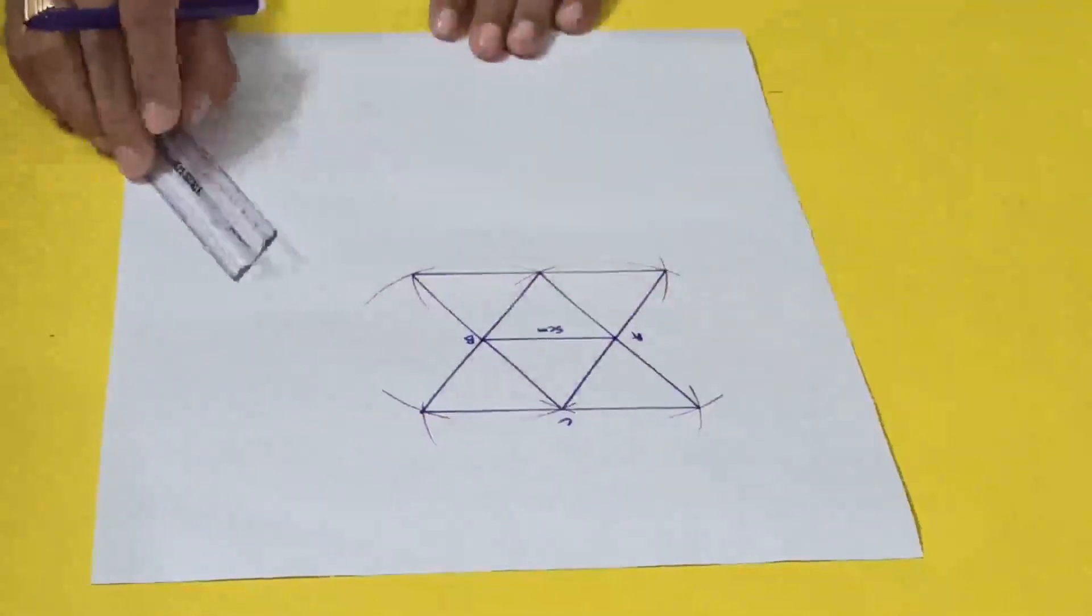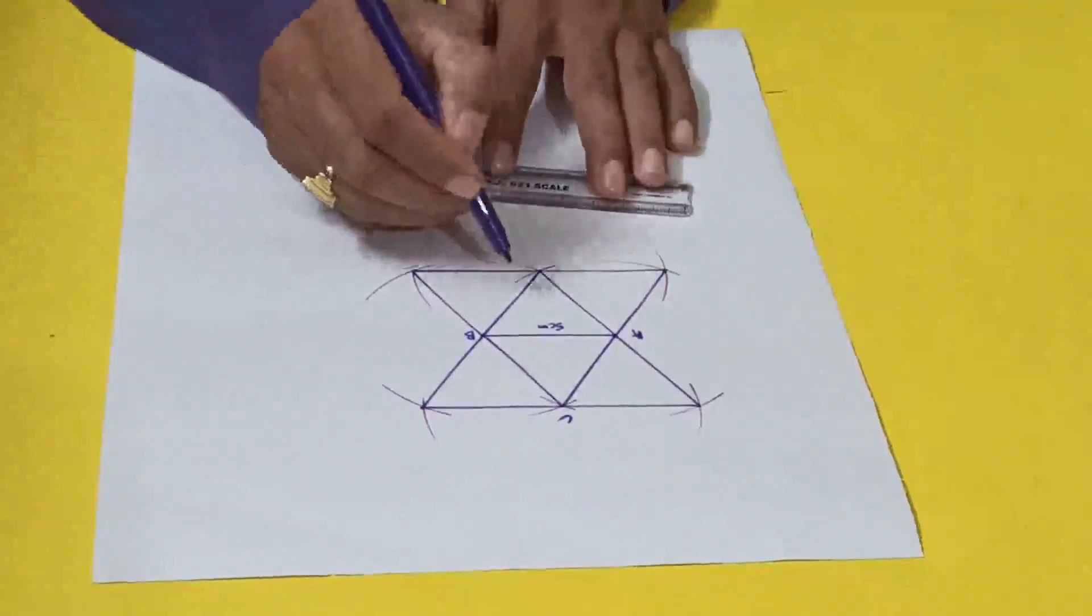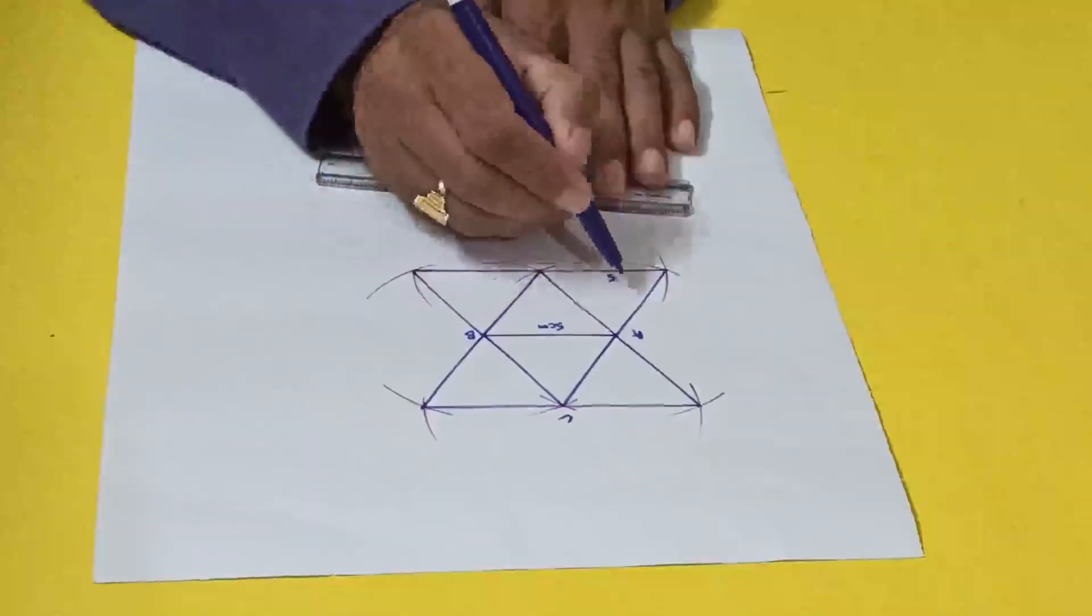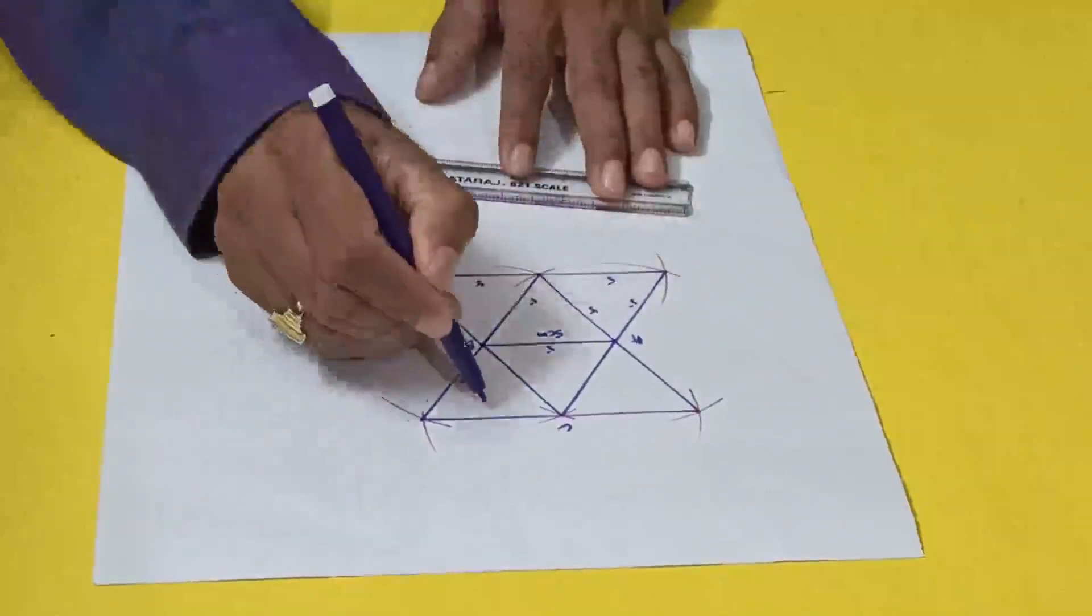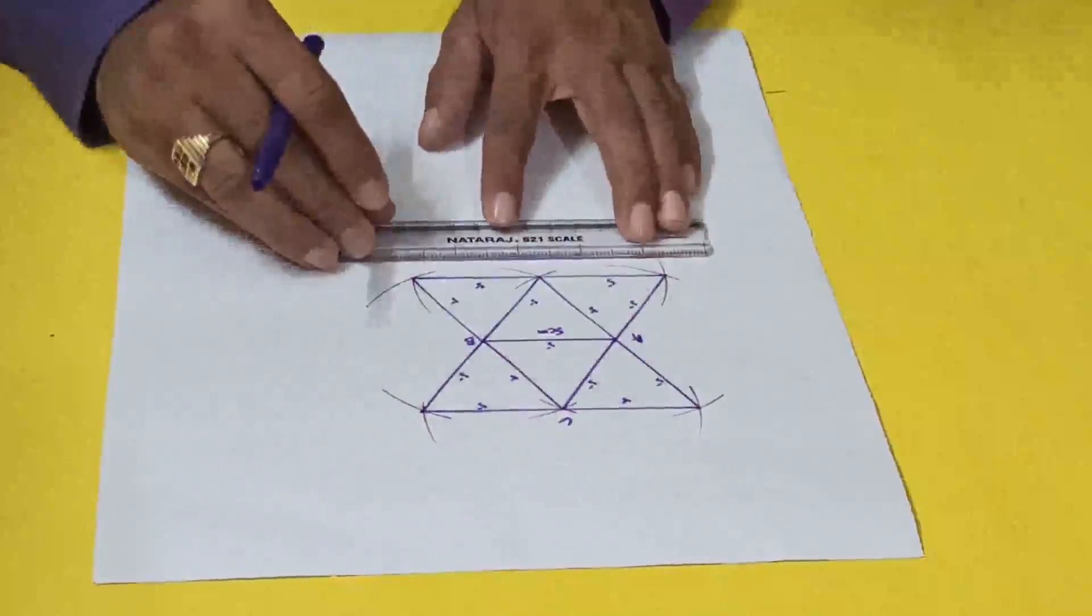So this is over. Now I will draw the border, so each five centimeter. Next we'll draw the border.